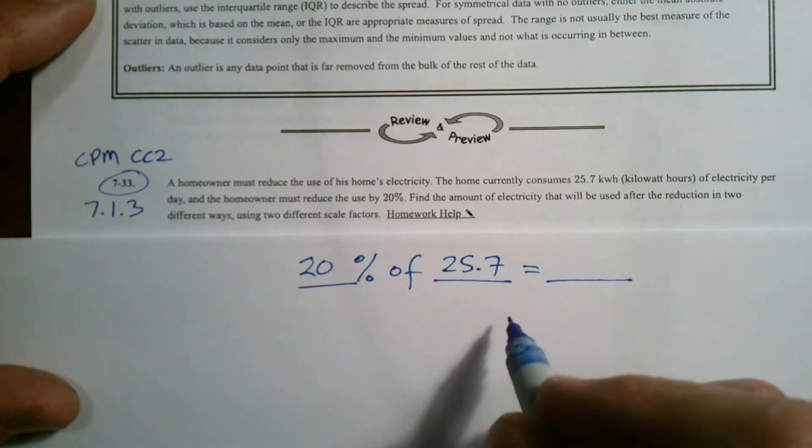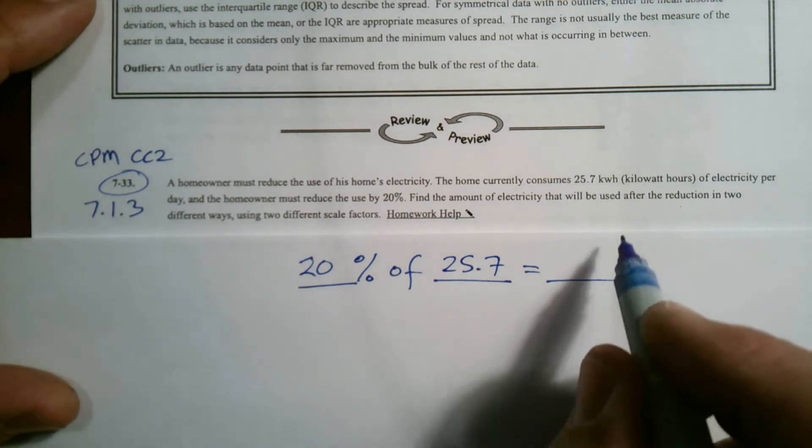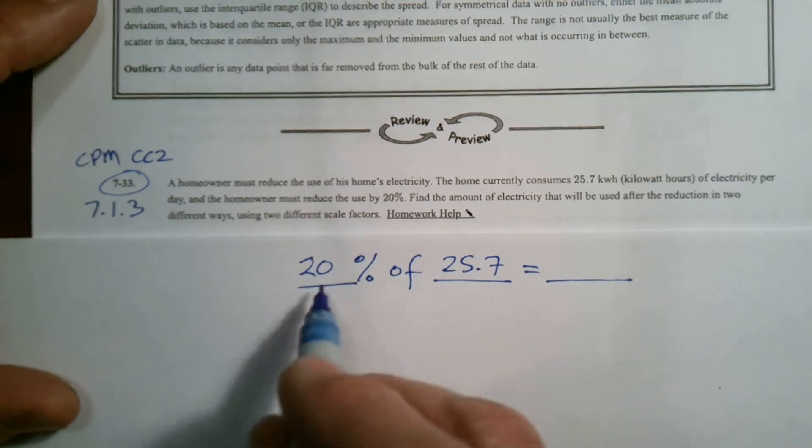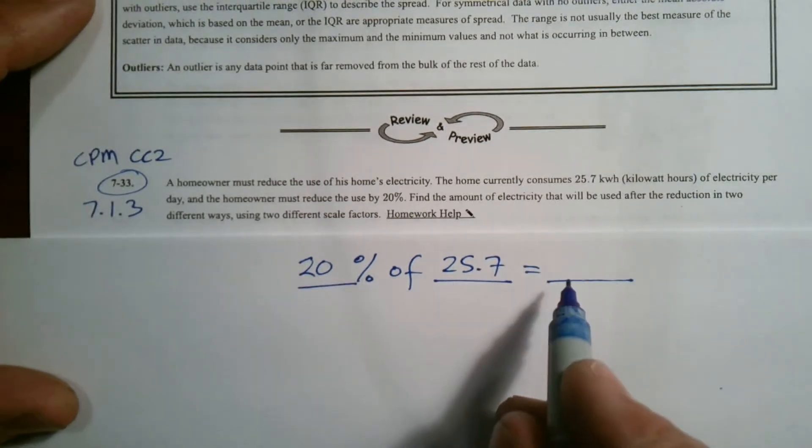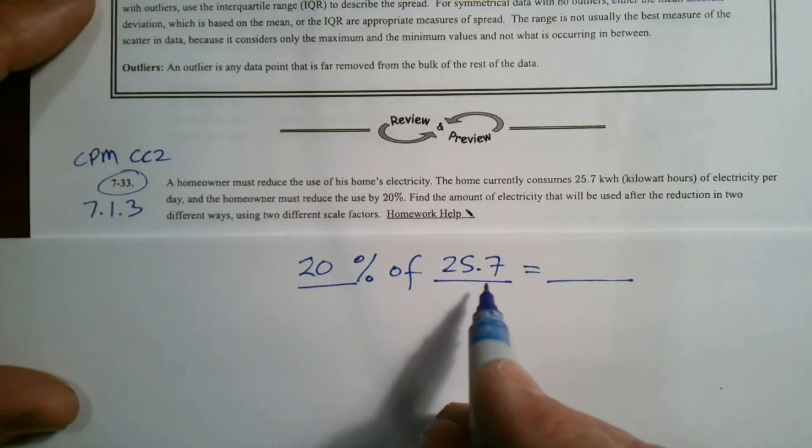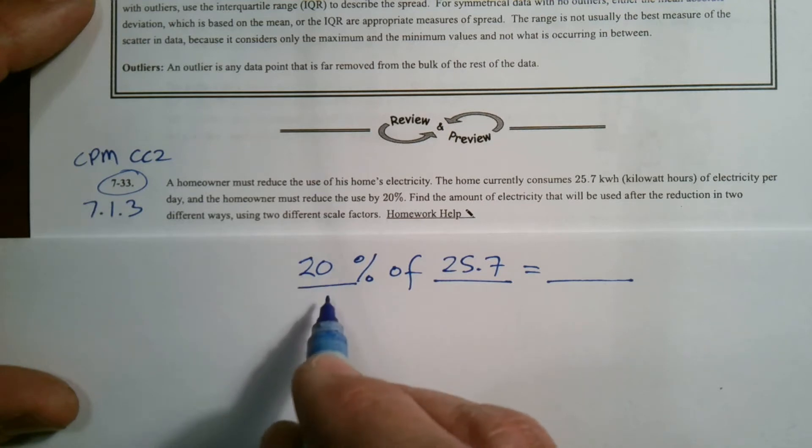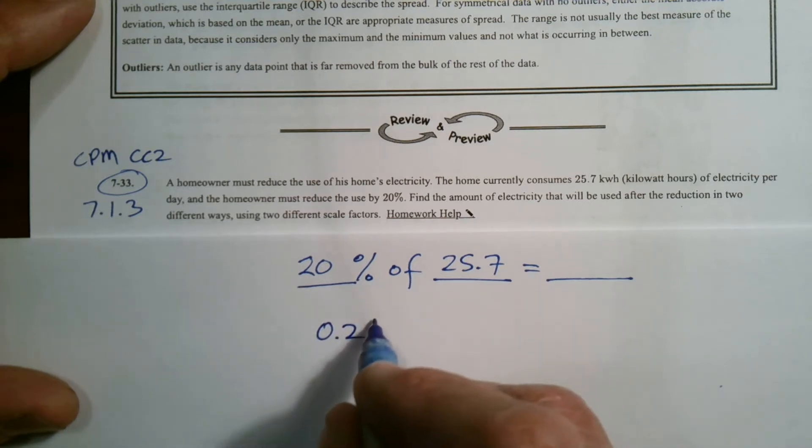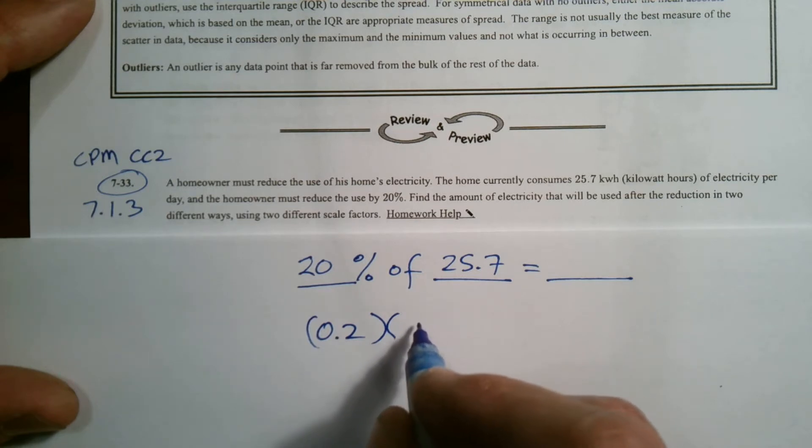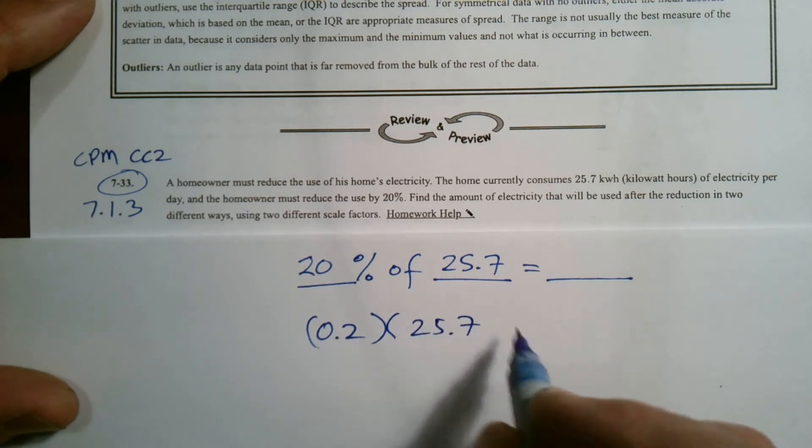That's going to give me my reduction. To do this math, once you know your equation, remember 20% needs to be converted to a multiplier, a scale factor. 20% has to be written as a decimal or as a fraction. I'm going to write it as a decimal. 20% is 0.2, and then of means to multiply. So I'm going to take that 0.2 and multiply it by 25.7.